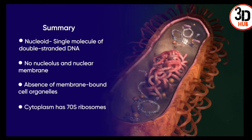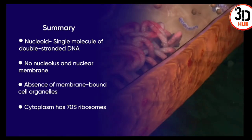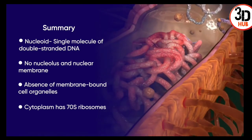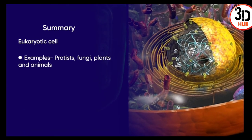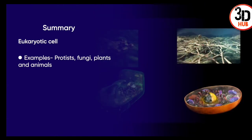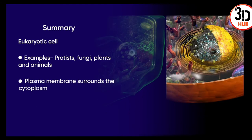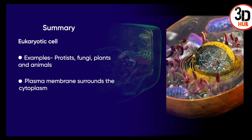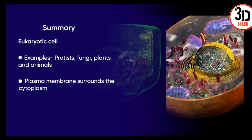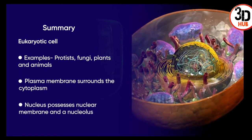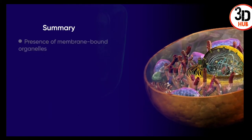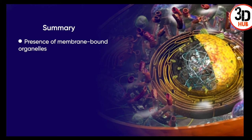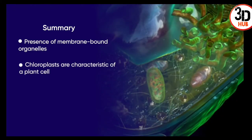For the eukaryotic cell: eukaryotic organization is found in protists, fungi, plants, and animals. The plasma membrane is the outermost covering of an animal cell, while a plant cell has an additional rigid cell wall. A distinct nucleus with a nuclear membrane and nucleolus is present, along with membrane-bound cell organelles.